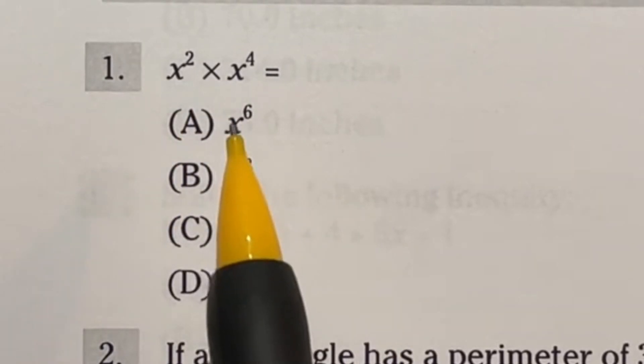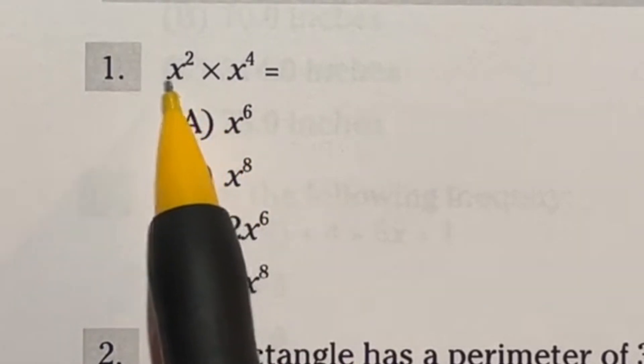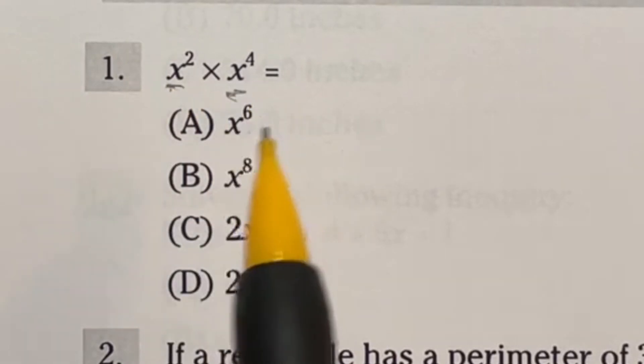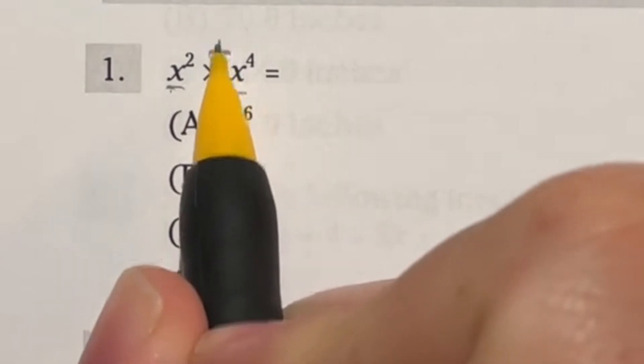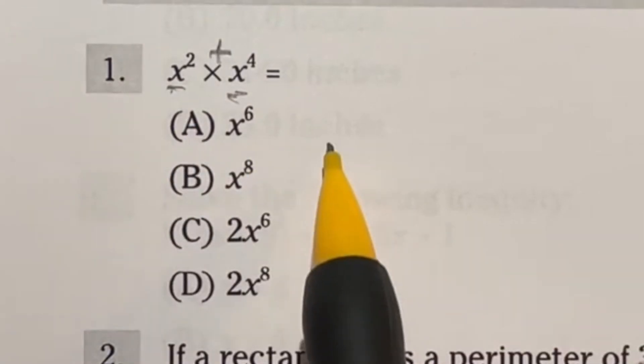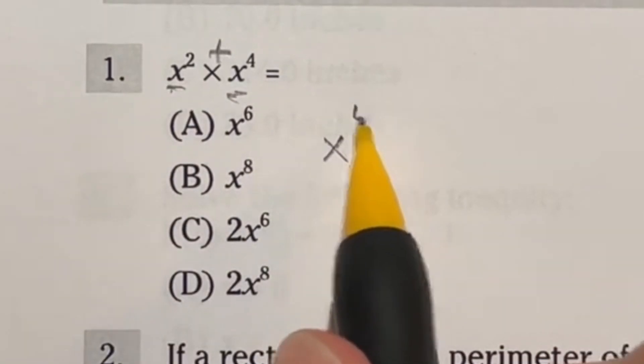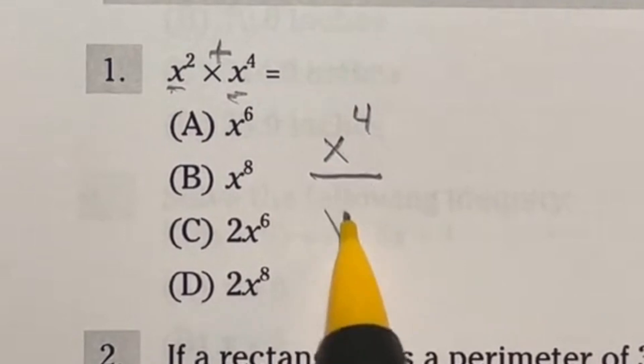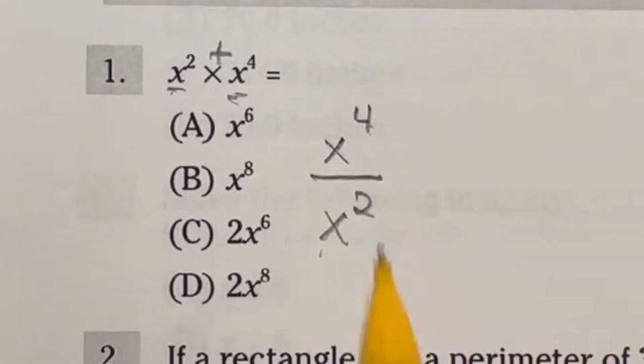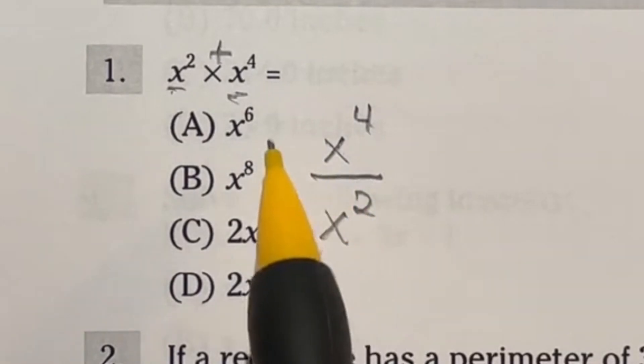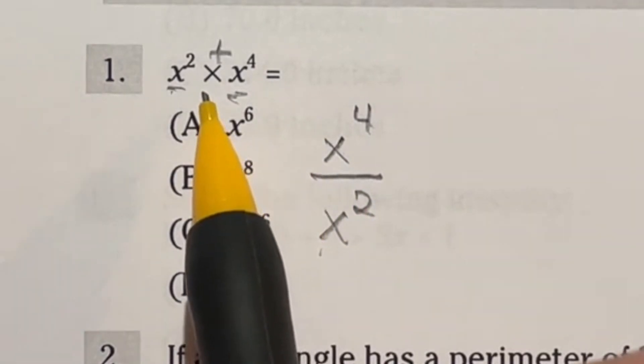but you do need to know your exponent rules. So if you did not know, if you have the same base, in this case our base is x, then when you multiply the two together, you can actually add the exponents. That is called your product rule. There's also another one called your quotient rule that says that if you have the same base with different exponents or the same exponents being divided, you can subtract those. Kind of the opposite of the product rule, that's called the quotient rule. So these exponent rules make these questions extremely easy.